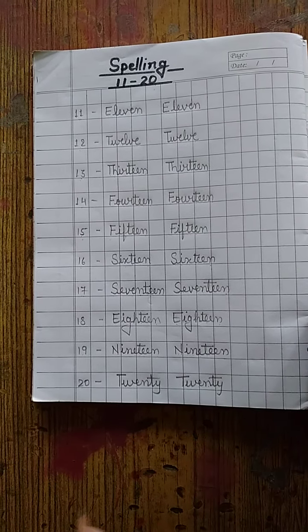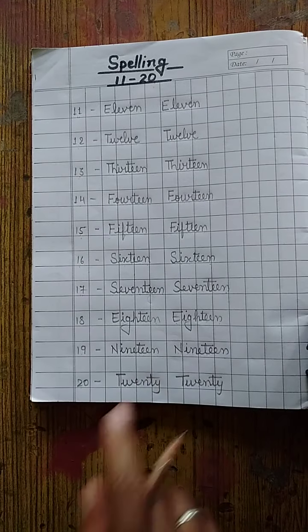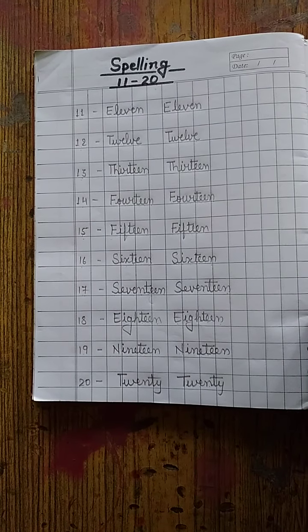So children, your homework is write 11 to 20 spelling in your copy. Thank you.